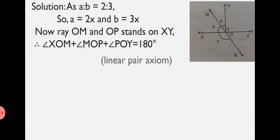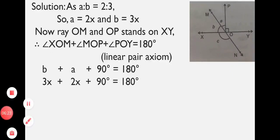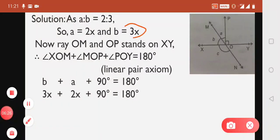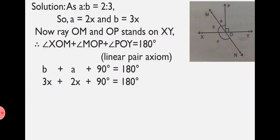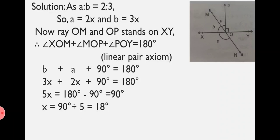Inserting the values: B plus A plus 90 equals 180. We know B equals 3X and A equals 2X. So we write 3X plus 2X plus 90 equals 180. Therefore, 5X equals 90, so X equals 18 degrees. We need to find A and B, which are 2X and 3X respectively. Now we use the value of X to find A and B.